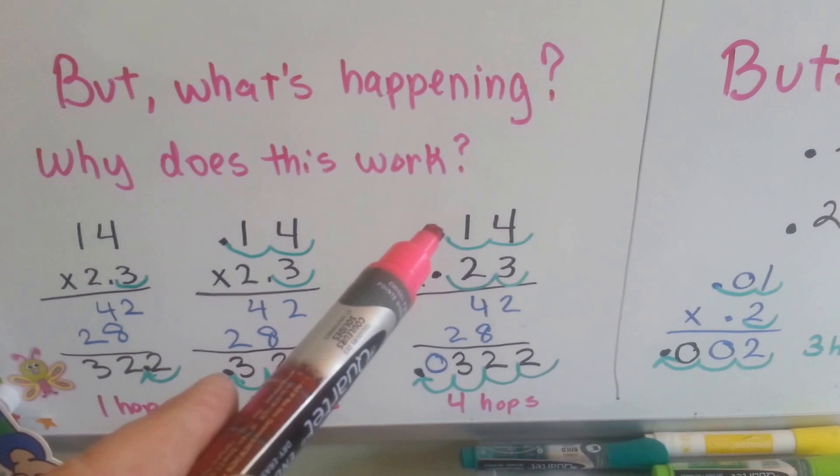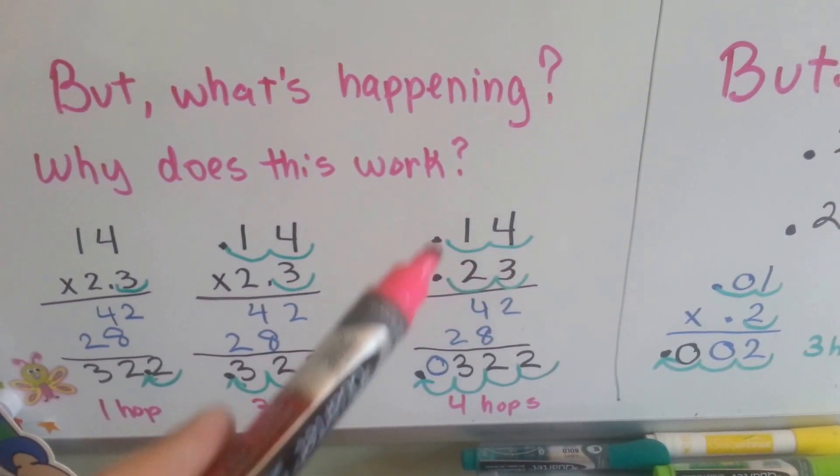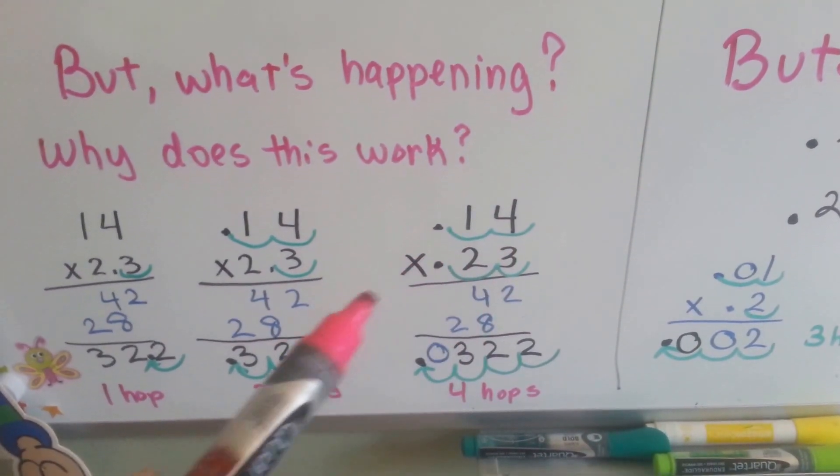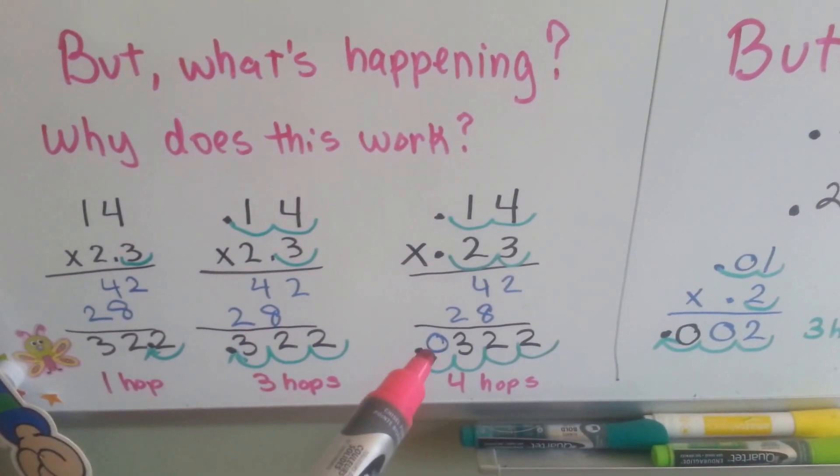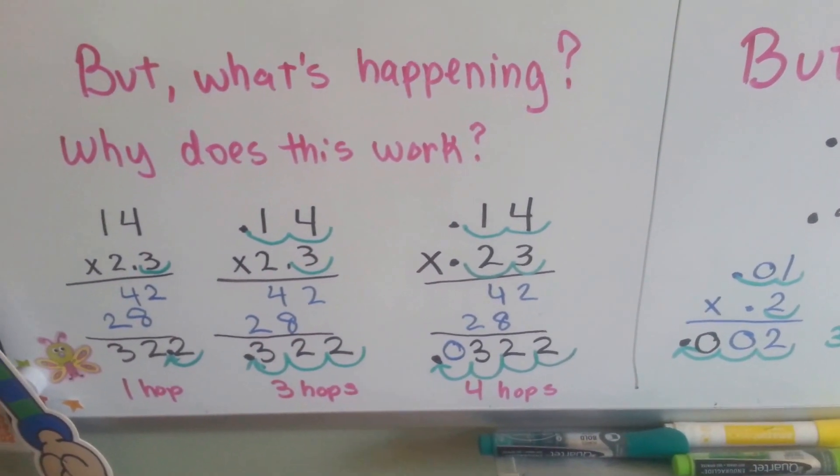What if there was a decimal point in front of both numbers? Now the hops are 1, 2, 3, 4 hops. We'd have to add a zero before being able to put the decimal point in. What is going on? Why is this happening?